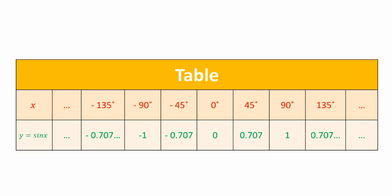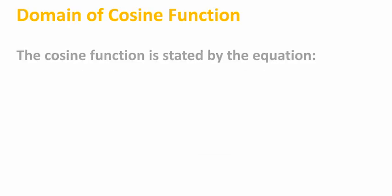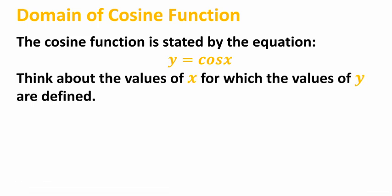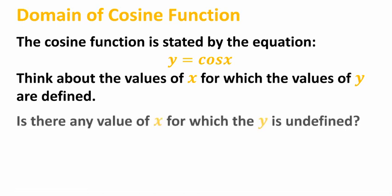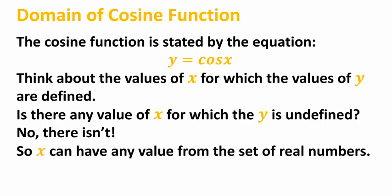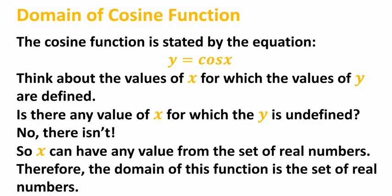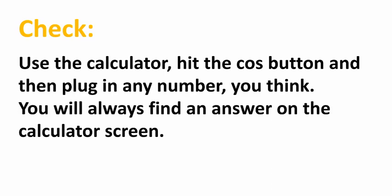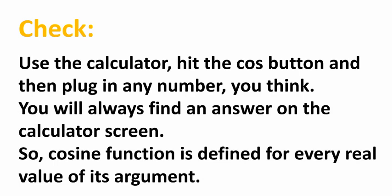So the range of the function y = sin(x) is the set of all real numbers from -1 to 1. Now, the cosine function is stated by the equation y = cos(x). Think about the values of x for which y is defined — is there any value of x for which y is undefined? No, there isn't. So x can have any value from the set of real numbers, and therefore the domain of this function is the set of real numbers. Use the calculator, hit the cosine button and plug in any number — you will always find an answer. So the cosine function is defined for every real value of its argument.